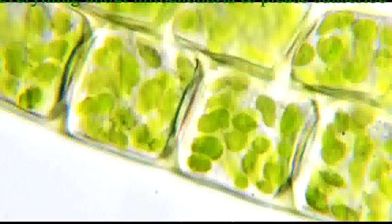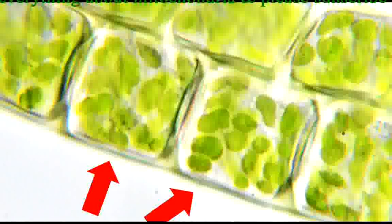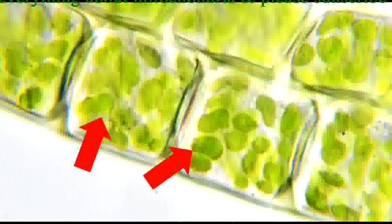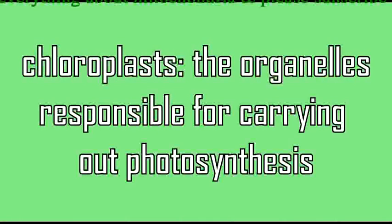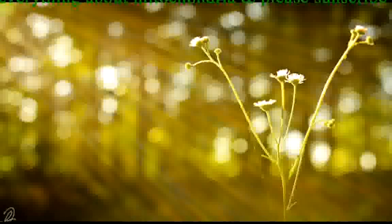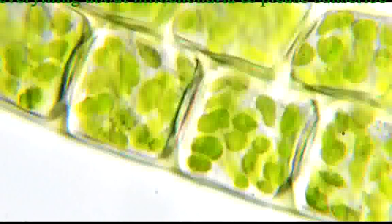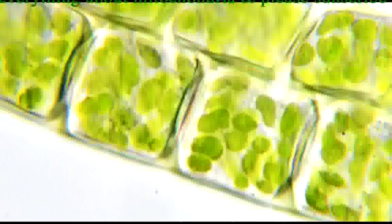These are chloroplasts. The cells of plants and algae can contain many chloroplasts. Chloroplasts are the organelles responsible for photosynthesis — the process by which light energy from the sun is converted into chemical energy. The more chloroplasts a cell contains, the more photosynthesis it can carry out. This light micrograph of moss cells shows that they contain many chloroplasts and carry out a lot of photosynthesis.